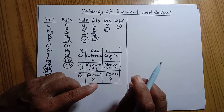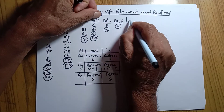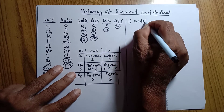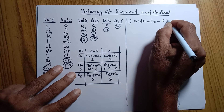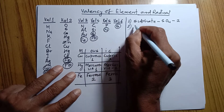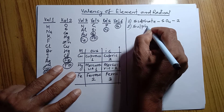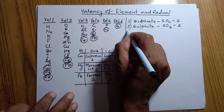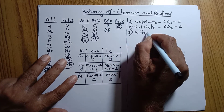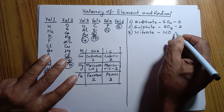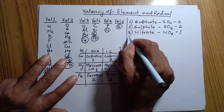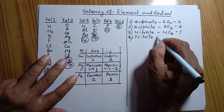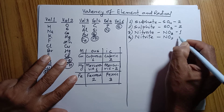Now I am talking about radicals. There are some radicals which we must remember and their valency should also be remembered. For example: sulfate (SO₄), valency is 2. Sulfite (SO₃), valency is 2. Nitrate (NO₃), valency is 1. Nitrite (NO₂) — it is different from nitrate — valency is 1.